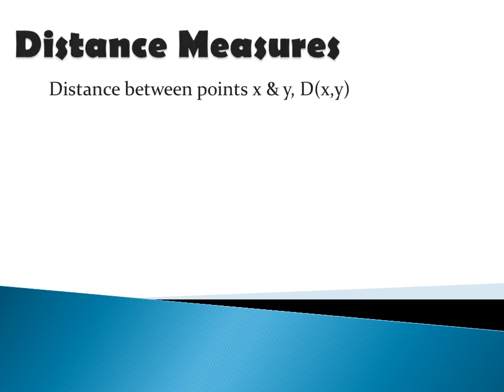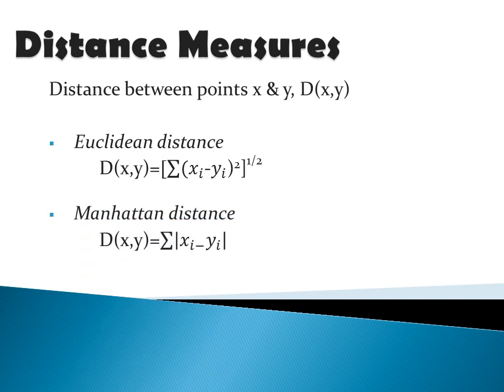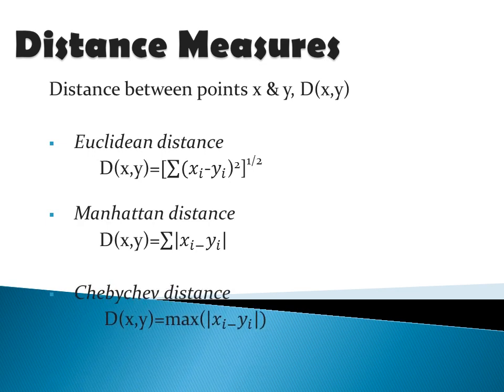Three distance measures are used to find the closest pair of data points between two clusters. The first method is Euclidean distance: d(x,y) = square root of sigma of (xi minus yi) squared, where xi belongs to the first cluster and yi belongs to the second cluster. The second method is Manhattan distance or city block distance: d(x,y) = sigma of |xi minus yi|. The third one is Chebyshev distance, where we find the maximum distance between two data points.